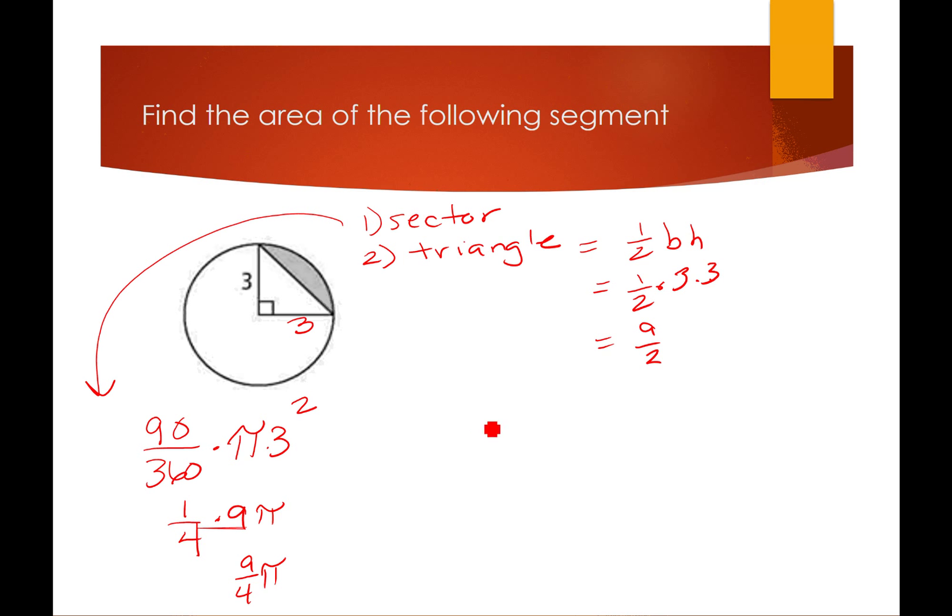So now to find the area of the shaded sector, I'm just going to subtract these two. So the sector is the bigger one, 9/4π minus 9/2, and that's simplified. Or we can plug it into our calculator, and when I plug it in, I'm just going to plug it in as 9/4 times π.